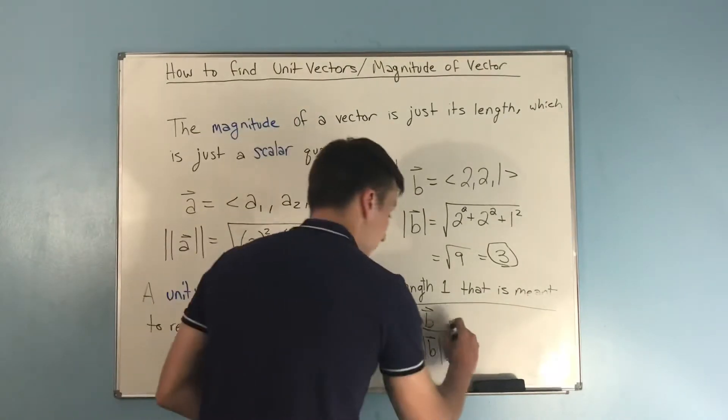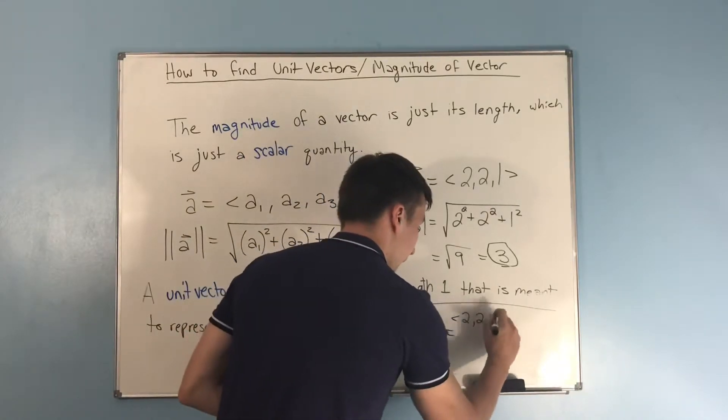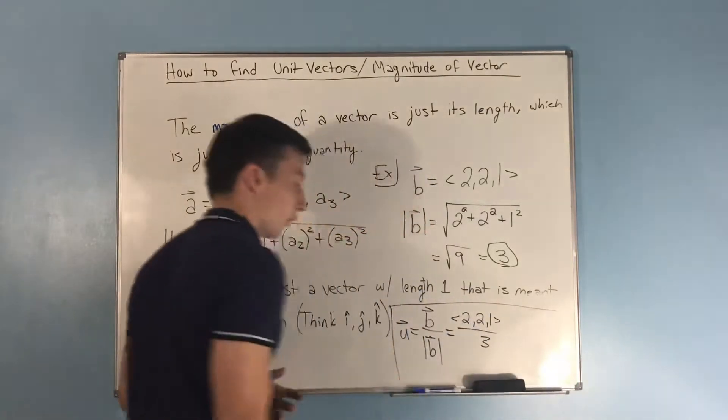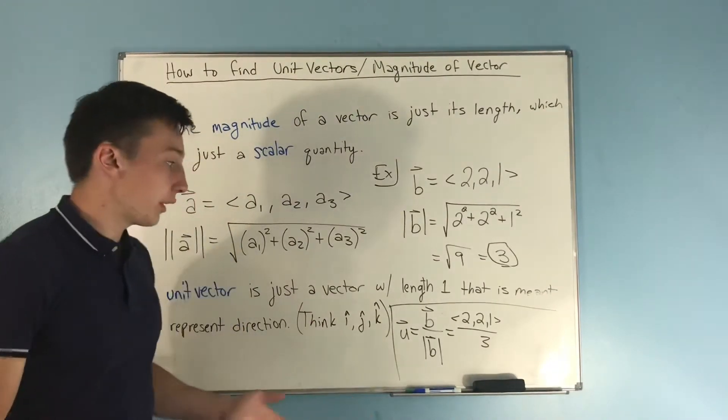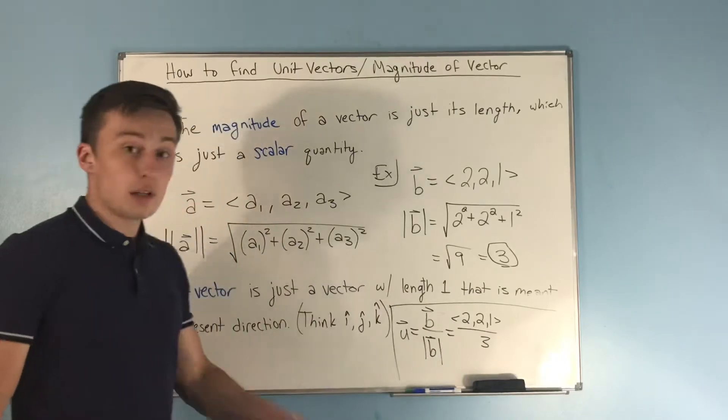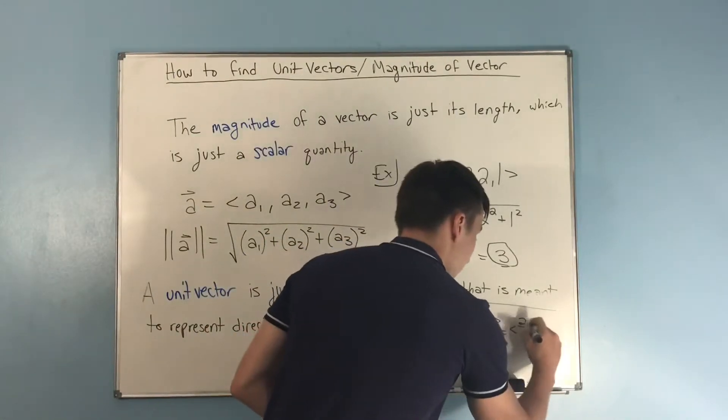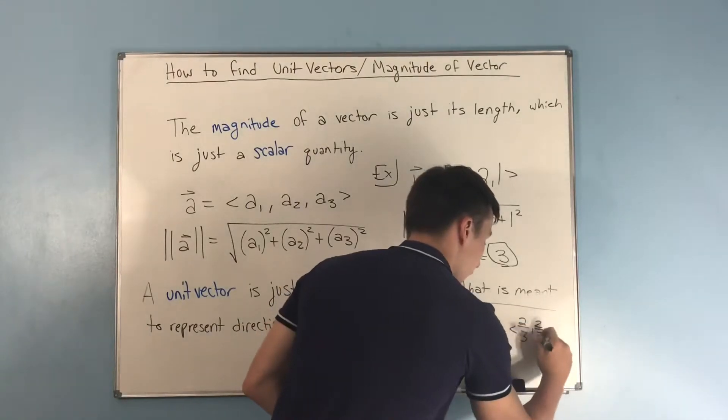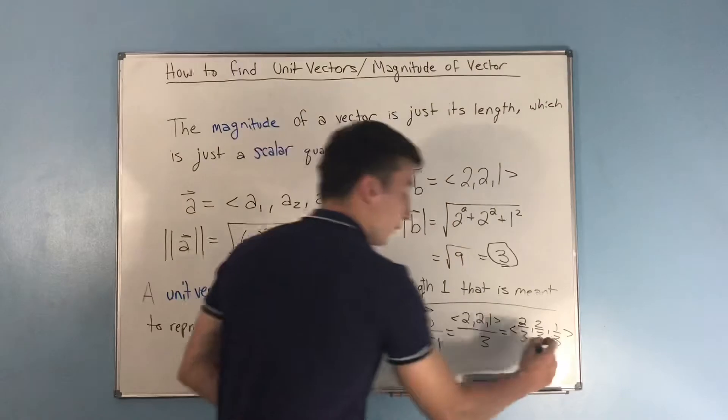So this is basically the same thing as 2, 2, 1 divided by 3. Scalar multiplication, scalar division, same kind of deal here. You're going to divide every term, every component by 3. So you end up with 2 thirds, 2 thirds, and 1 third. So that's really all there is to it.